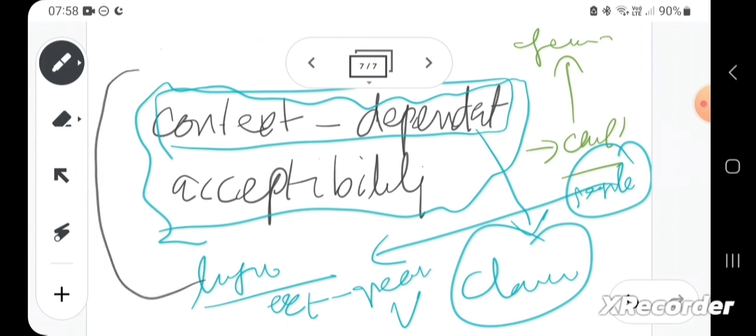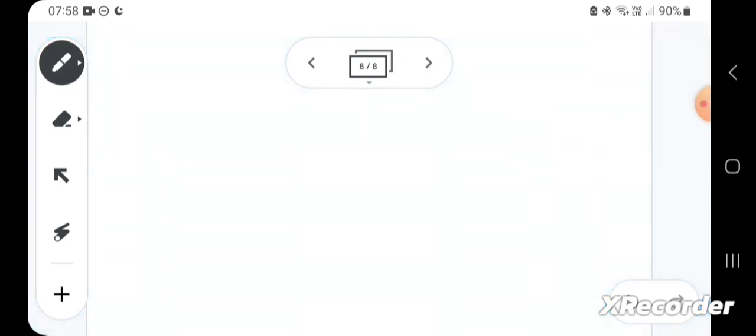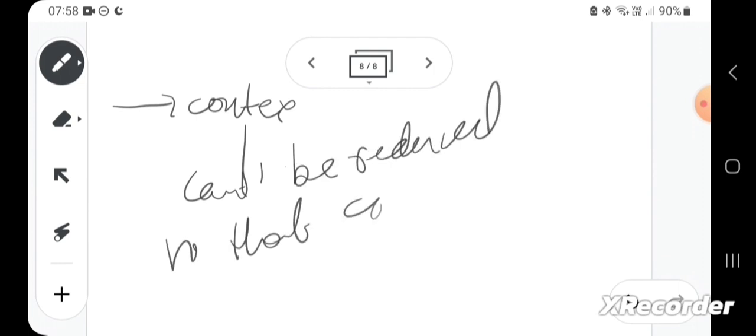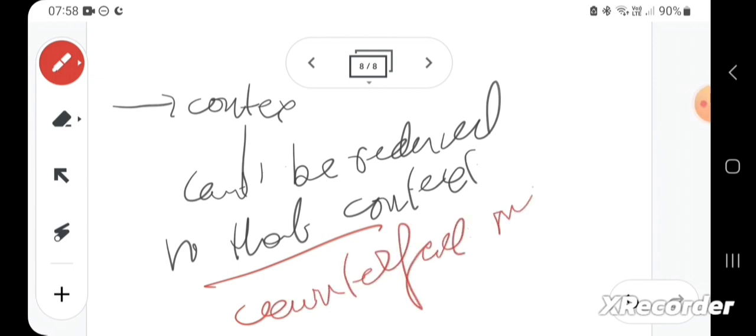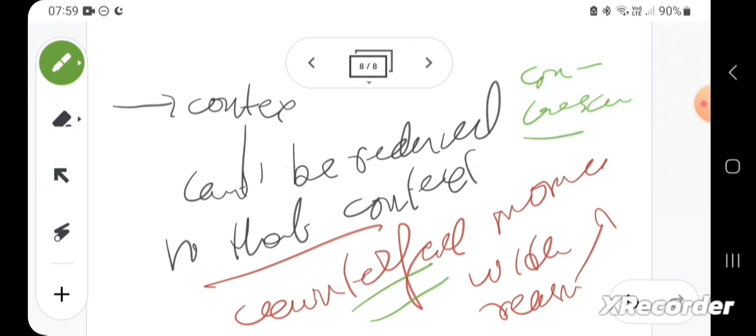But for Habermas, it does not follow from this that they can be reduced to that context. And the reason they can't be reduced to that context is that counterfactuality, a moment within a reason which we talked about. Reasons and claims to reason, and that counterfactual moment makes it possible that every context can be transcended.